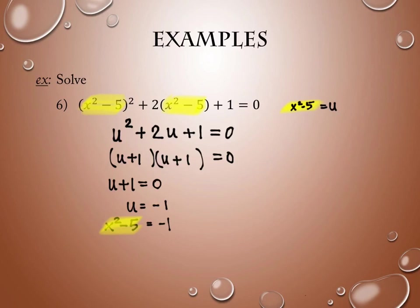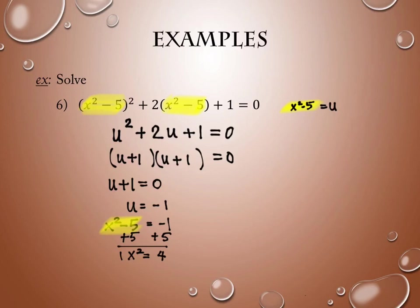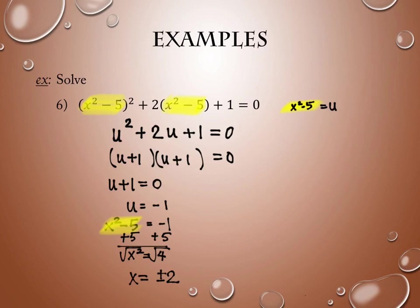Putting x squared minus 5 back in place of u, I finish solving for x. Adding 5: x squared equals 4, then taking the square root — with plus or minus — gives x equals plus or minus 2. I don't need to worry about making a denominator zero here. There are no denominators on this one. So the problem ends up with two solutions.